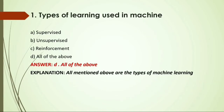MCQ: Types of learning used in machine learning — A) Supervised learning; B) Unsupervised learning; C) Reinforcement learning; D) All of the above. Answer: All of the above, because all mentioned machine learning methods are types of machine learning.